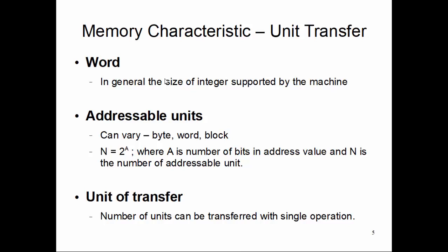Now addressable unit means what is the lowest amount of memory I can access per address. It can be a byte addressable memory, it can be a word addressable memory, it can be a block addressable memory. Block address means a block consists of multiple words. N equals 2 to the power A, where A is the number of bits in the address value and N is the number of addressable units. So if a memory is block addressable, one block per address, and one block contains let's say 16 words, then it means it is 16 words per address.